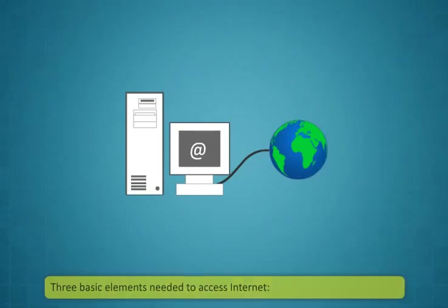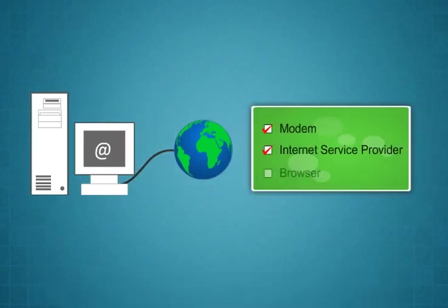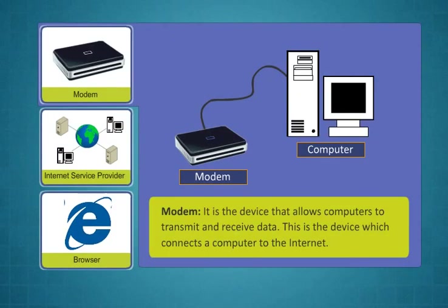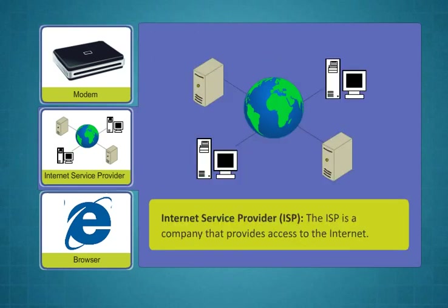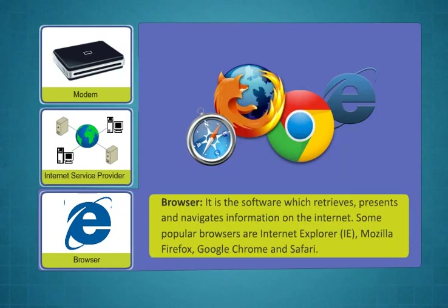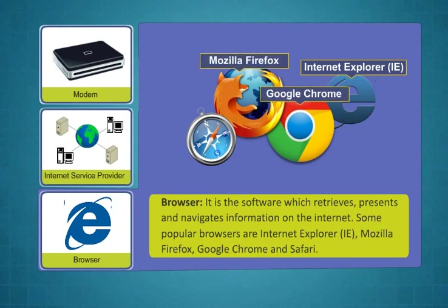To access the internet, there are three basic elements you need in your computer: Modem, Internet Service Provider, and Browser. A modem is the device that allows computers to transmit and receive data. This is the device which connects a computer to the internet. Internet Service Provider or ISP is a company that provides access to the internet. A browser is the software which retrieves, presents and navigates information on the internet. Some popular browsers are Internet Explorer, Mozilla Firefox, Google Chrome and Safari.